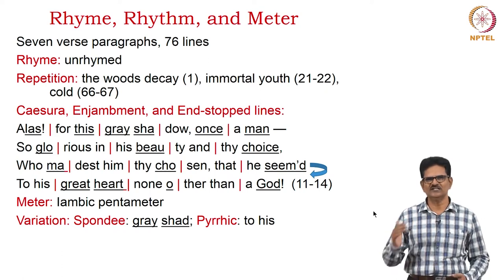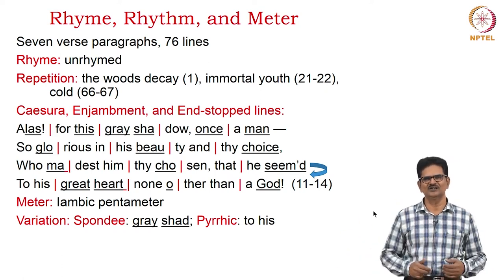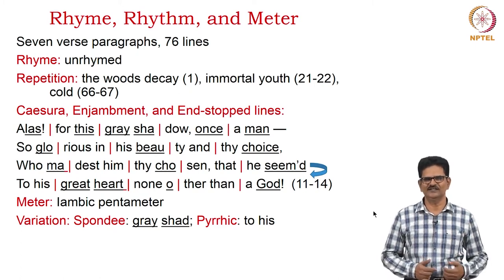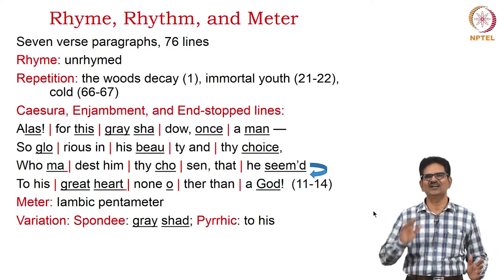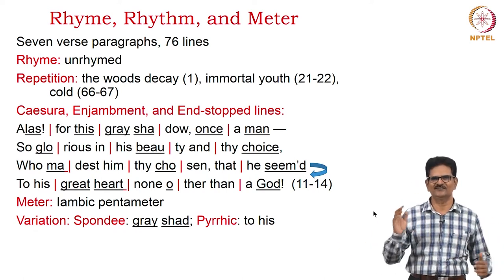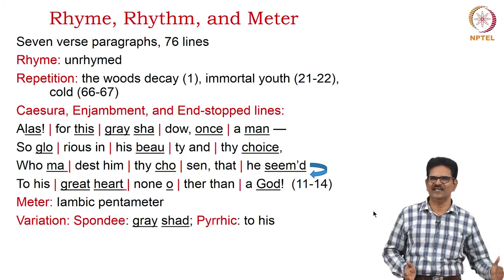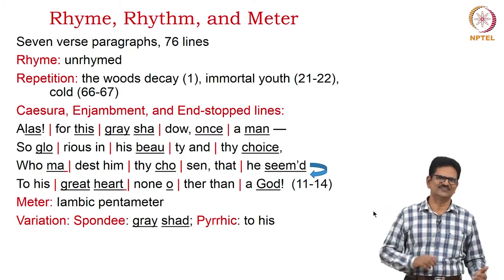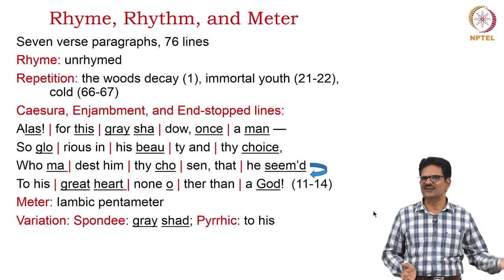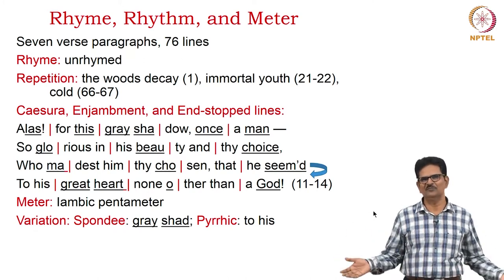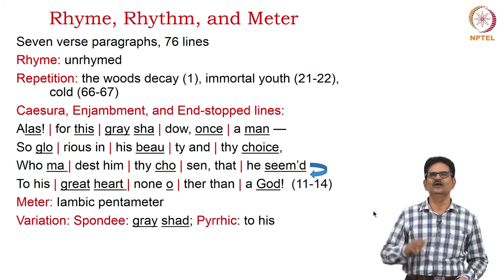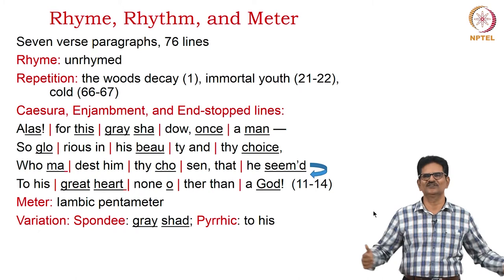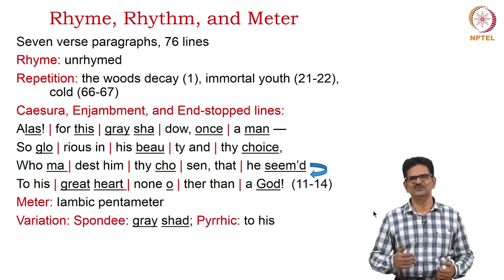We also have caesura, enjambment, and end-stopped lines. For example: 'Alas, for this grey shadow, once a man, so glorious in his beauty and thy choice, who madest him thy chosen, that he seemed to his great heart none other than a god.' The meter is iambic pentameter. We have variations of spondee and pyrrhic in 'grey shadow' and 'to his,' and trochee can be found in other passages.